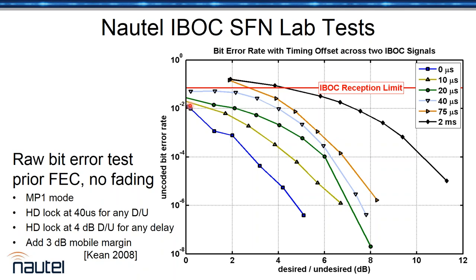Shifting the time offset between two HD signal sources — at 10, 20, and 40 microseconds — all stay below the IBOC reception limit, so you're okay. But at 75 microseconds we're starting to cross that limit, and you could get drops. Also, if you have two completely separate IBOC signals that are 2 milliseconds apart or more — even from different stations — a 4 to 5 dB signal difference will cause reception issues. Once one signal is stronger by about 7 dB, it will simply take over.